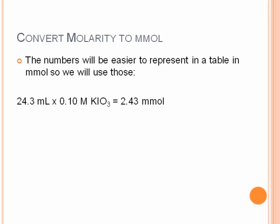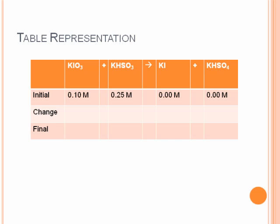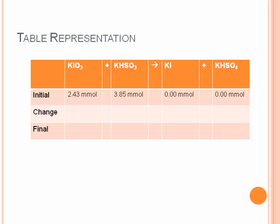In the case of the KiO3, we're going to use 24.3 milliliters times 0.1 molar, giving us 2.43 millimoles of KiO3. For the KHSO3, we're going to take 15.4 milliliters times 0.25 molar KHSO3 for a total of 3.85 millimoles. Now coming back to our table representation, we can stick millimoles in there instead of molarity, which will make it easier to interrelate the stoichiometry.